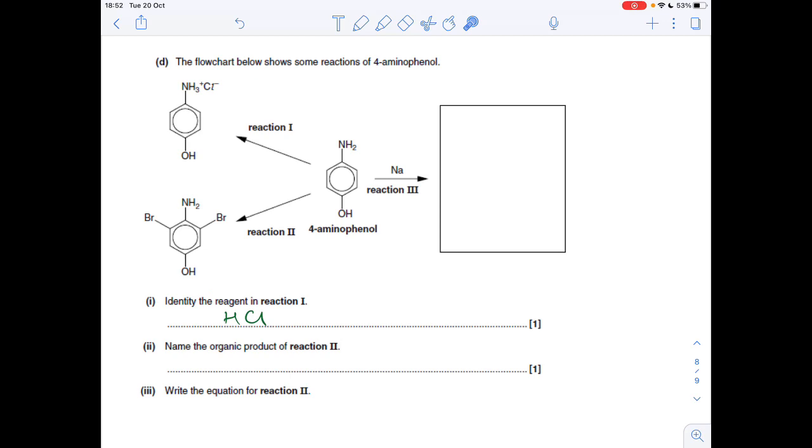we've got to name the product of reaction 2. So this thing here. So we know that this part is called 4-amino-phenol. So we've got to be careful with our numbering here. The fact that it says 4-amino means that that's carbon number 4. That's obviously carbon number 1. So that means this is carbon number 3. And this is carbon number 5. So this is called 3,5-dibromo-4-amino-phenol.